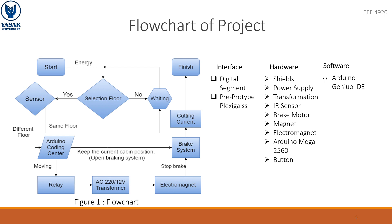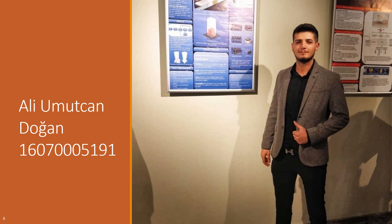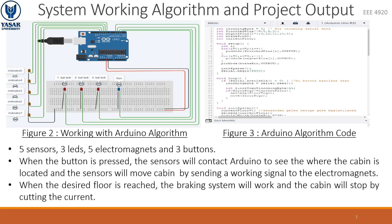My team members will explain the algorithm of the system in more detail. Hello, I am Umut. I continue the presentation. I will explain the system working algorithm and project output. Looking at the figure on the left, we see the algorithm connection of the Arduino. We can call this part the brain part of our project.